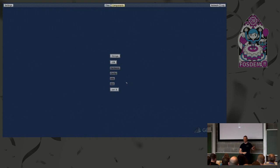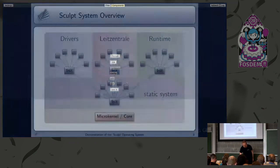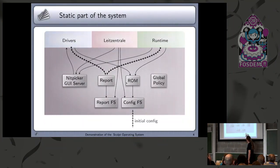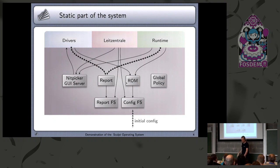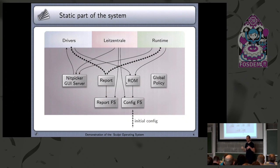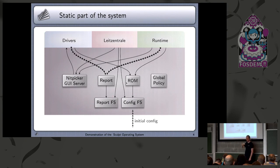But there's more behind the curtain. The static system basically contains this graphics server that you've just seen. Then it implements some global policy — for example, by pressing F11 I switch the slides on and off. And there are two pseudo-file systems. One is called a report file system, which basically aggregates states from the components — components running on top can post information, and these are captured in this in-memory file system. The counterpart is called the config file system, which contains configurations for the basic system. These are the only concepts needed to administer the system.